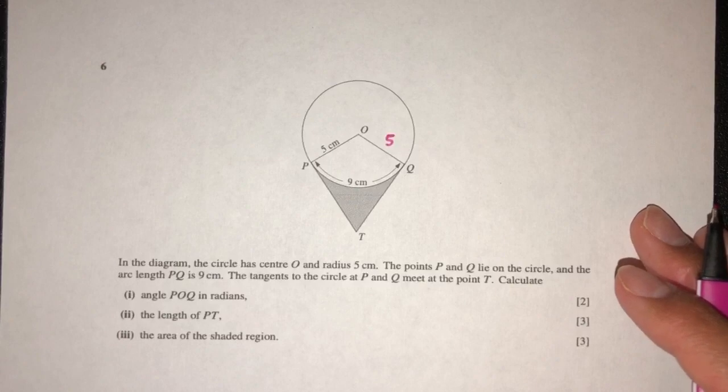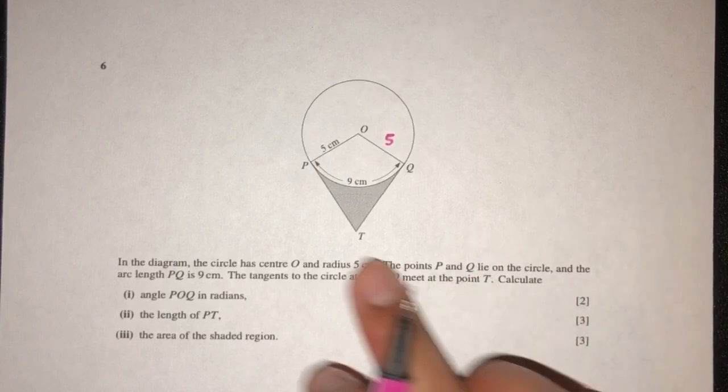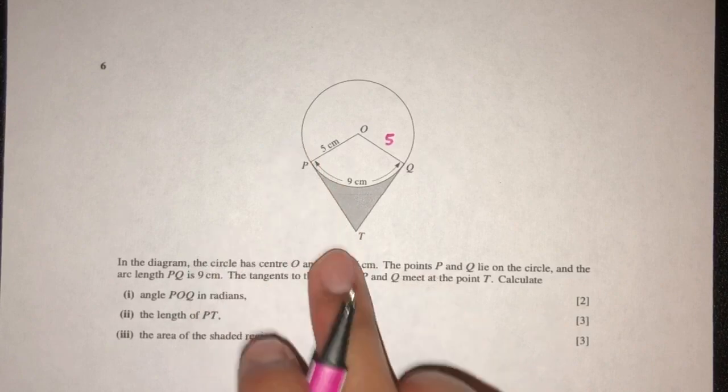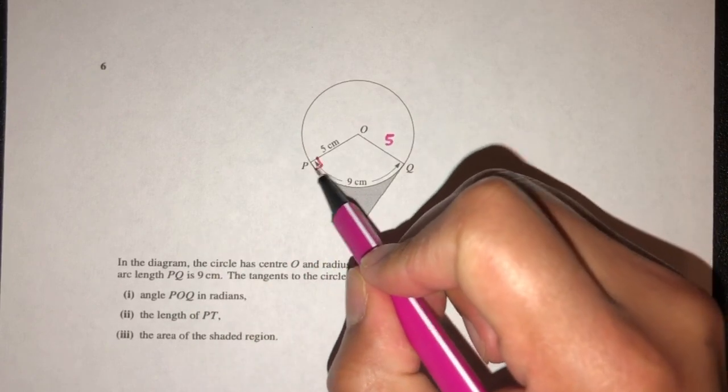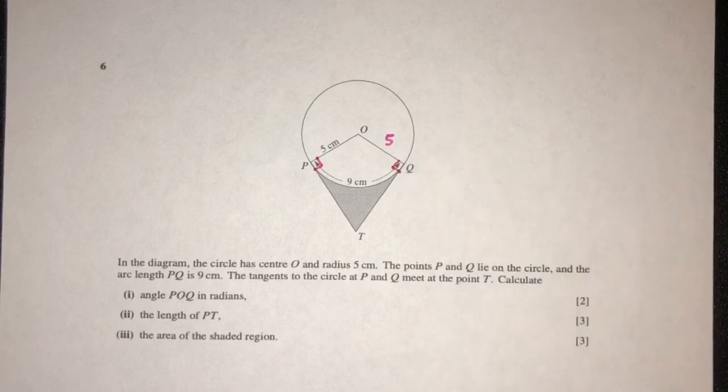The tangents to the circle at P and Q meet at the point T. We know that PT and QT are tangents, which means this angle is 90 degrees, and this angle is also 90 degrees.